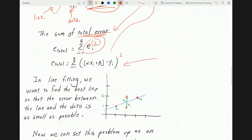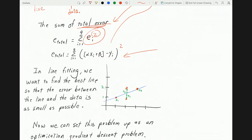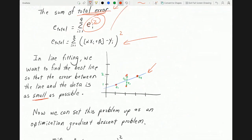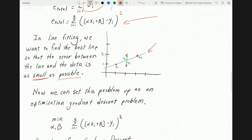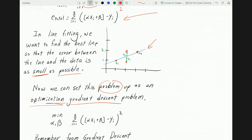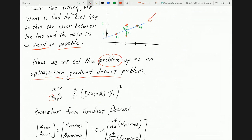In line fitting we want to find a line that the error is as small as possible. Obviously we want the line so that it's very close to all the dots simultaneously, so we want the error to be as small as possible. Now we can basically set this problem up as an optimization gradient descent problem. We want to find alpha and the beta that minimizes the total error.